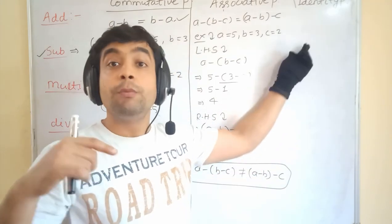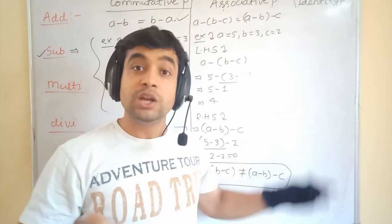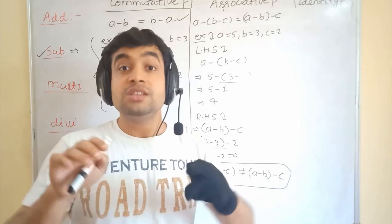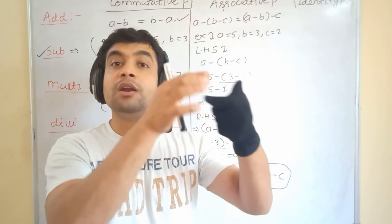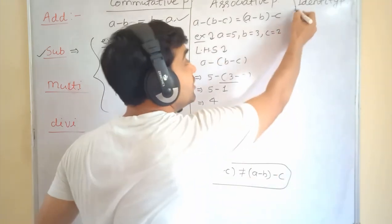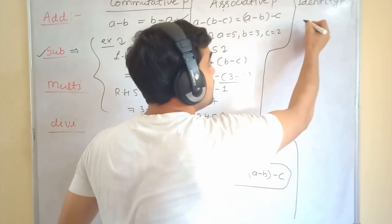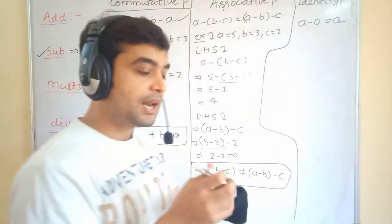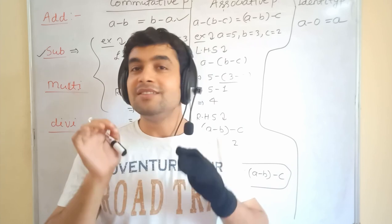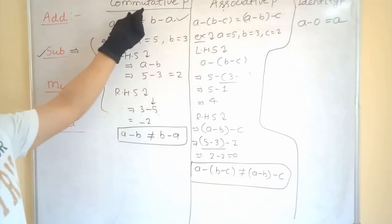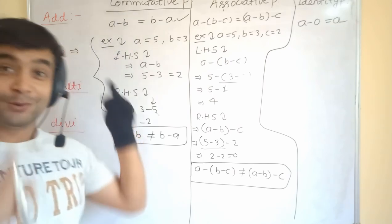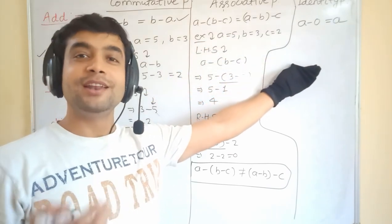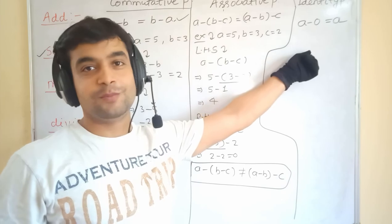Now for identity property of subtraction — this is not a property to check but to tell: what is subtractive identity? That means, by which number, if I subtract from any number, that number will not change. That number is zero. If I subtract 0 from any number, it always remains the same. So overall: subtraction is not following commutative or associative property, and the subtractive identity is zero.